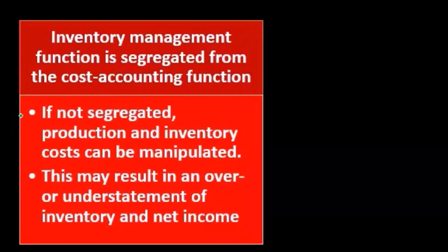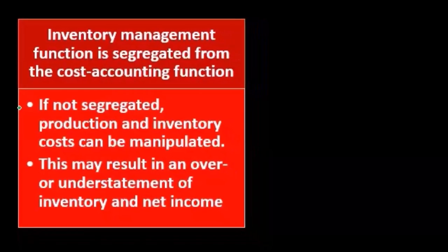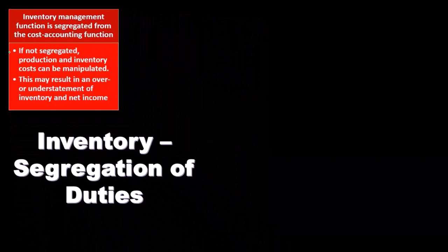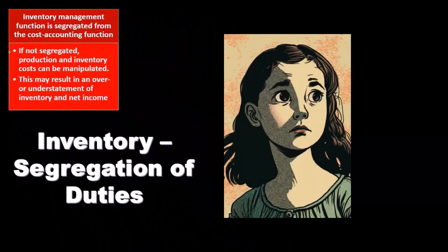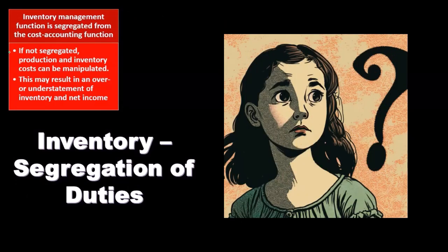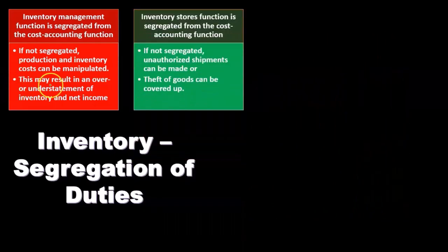This is an important factor for people to think about — where could fraud take place? As the auditor, we have a skeptical viewpoint when designing or auditing internal controls: where could fraud take place, what can we do to set up controls to reduce it, and how can we test those controls? This may result in an over or understatement of inventory and net income.